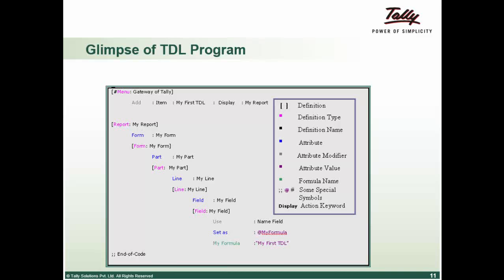Each definition has its own set of attributes. The gray ones are the attribute modifiers where every attribute has its value. There are formulas, special symbols, and action keywords. This is a very basic code and the output of this code would be 'my first TDL' text in your screen.